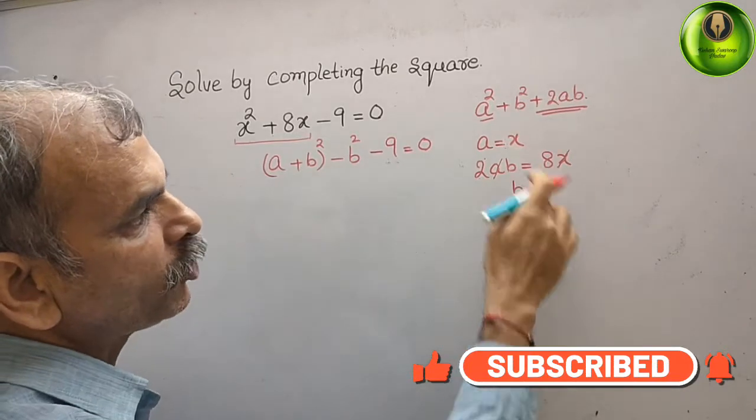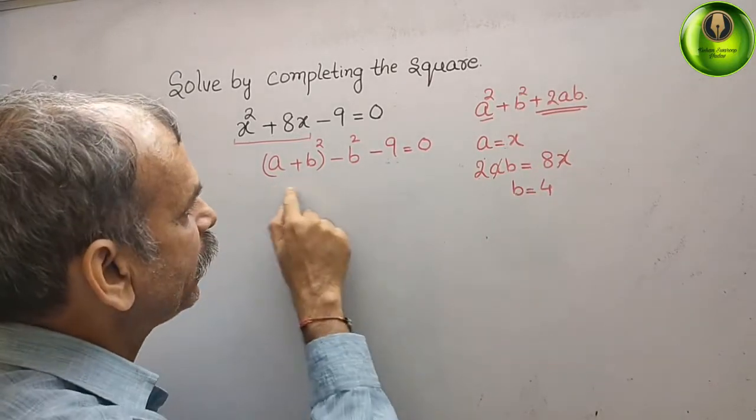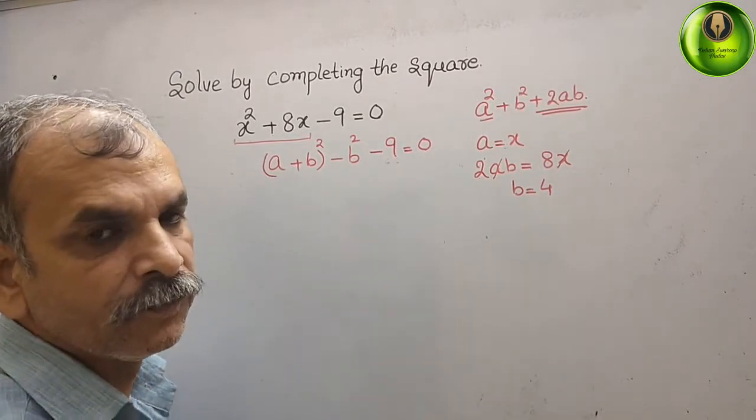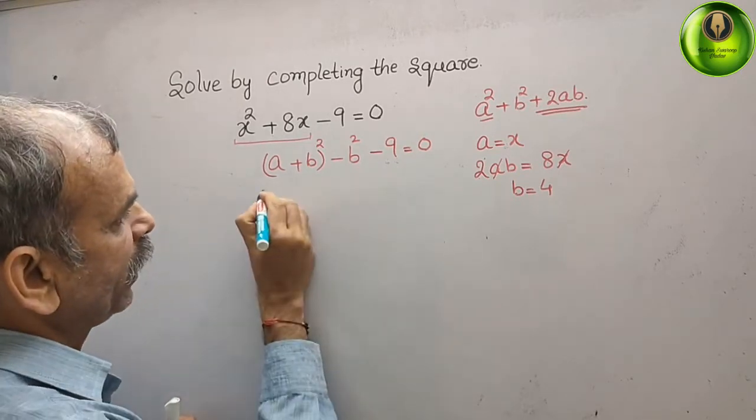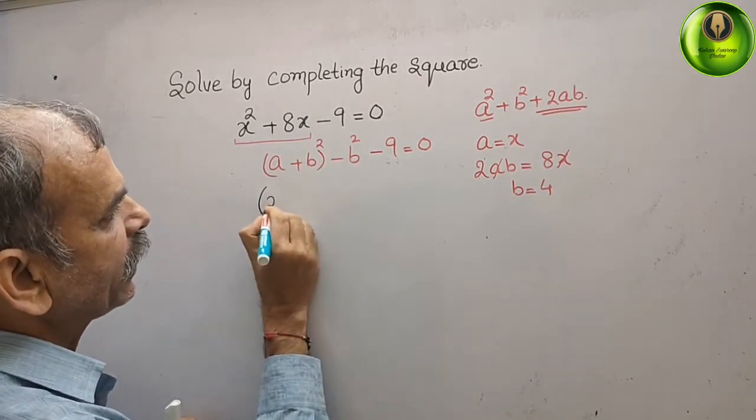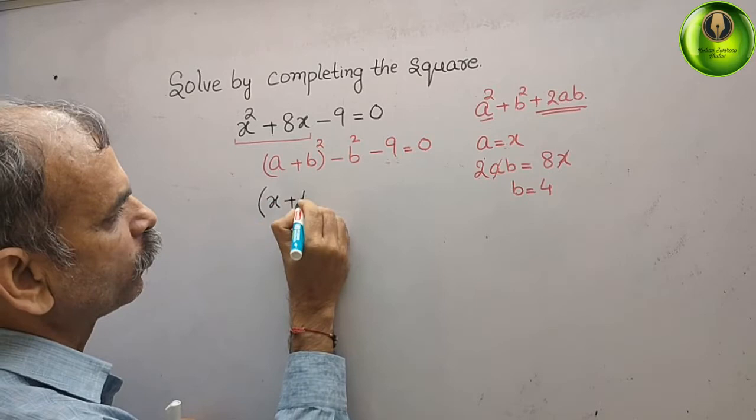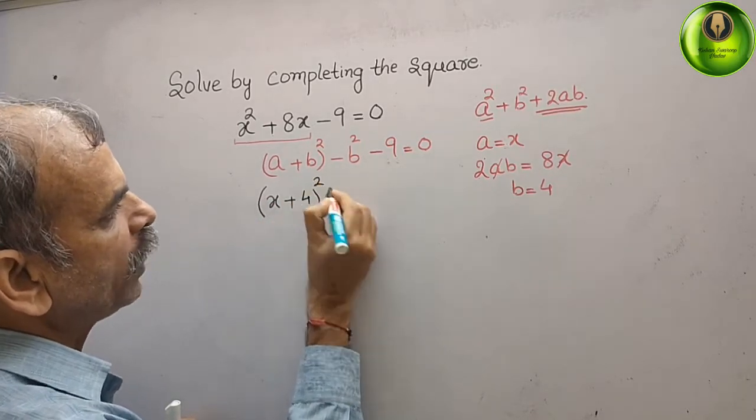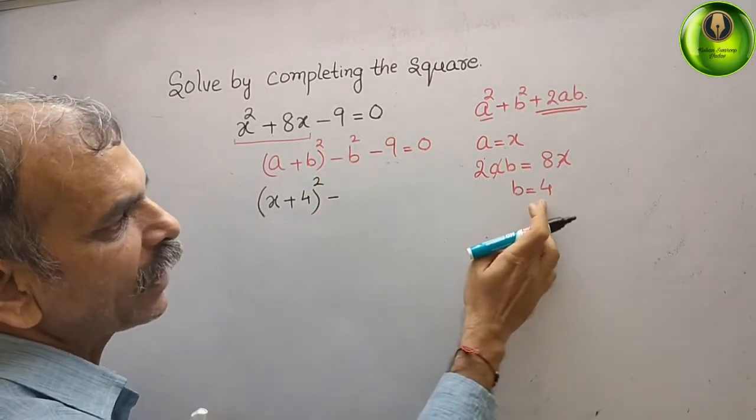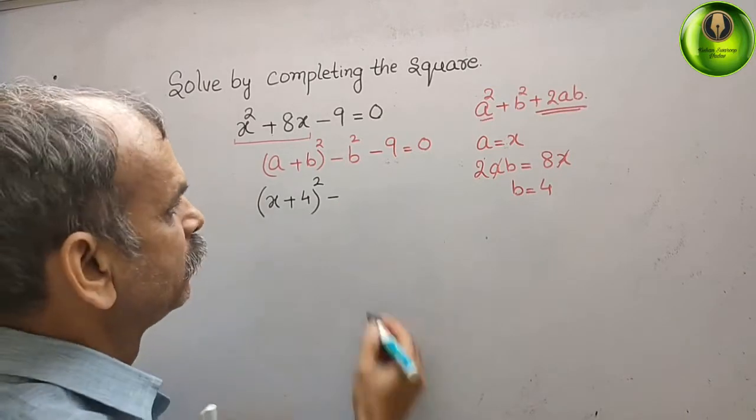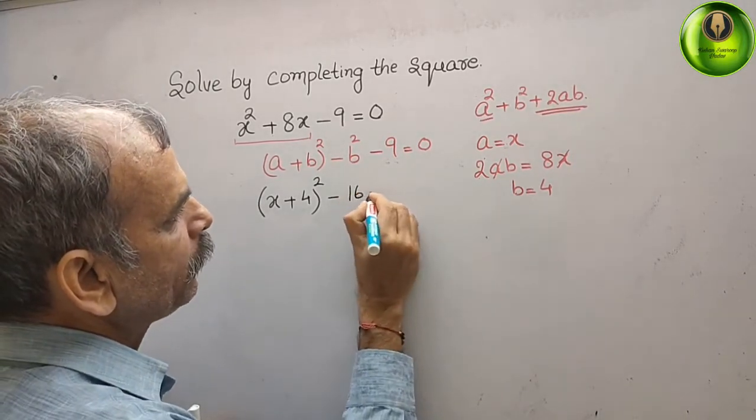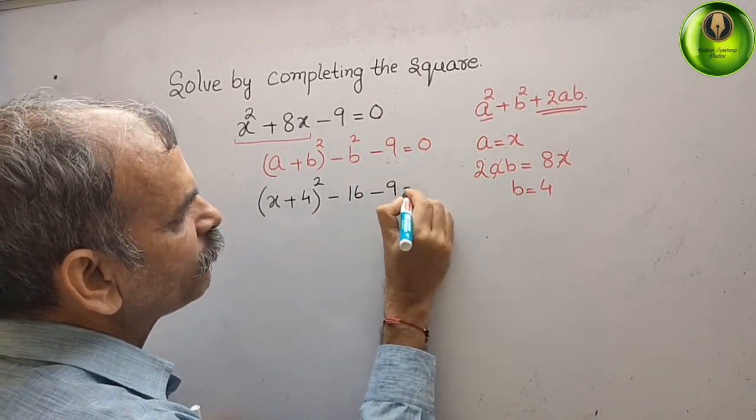Now we will substitute a and b in our equation. What we will get? We will write that: a is x plus 4, whole square, minus b², that means 4² is 16. 16 minus 9 that gives you 0.